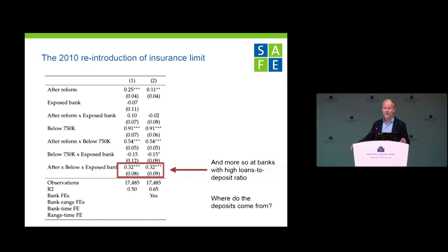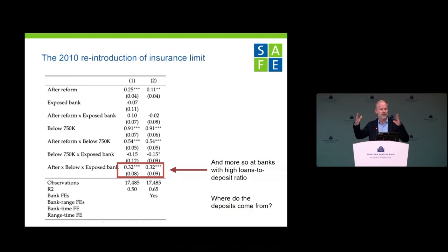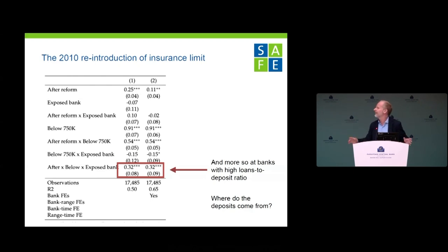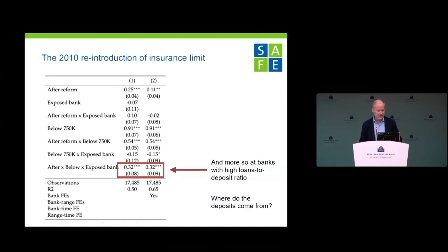My real question, given you have all this depositor-level data, is: where does the money come from and where does it go? If I take it out from Bank A and bring it to Bank B, come back to Bank A afterwards or go to Bank C — you have the identities of these people. You talk a lot about reallocation, but I didn't see direct evidence on the 're' part of that — tracking the actual flows.